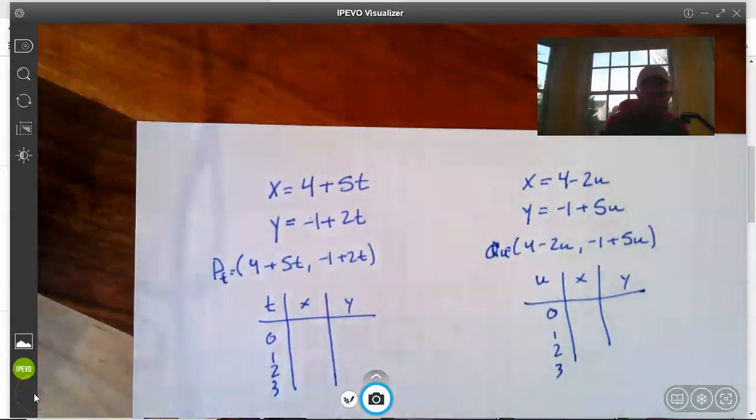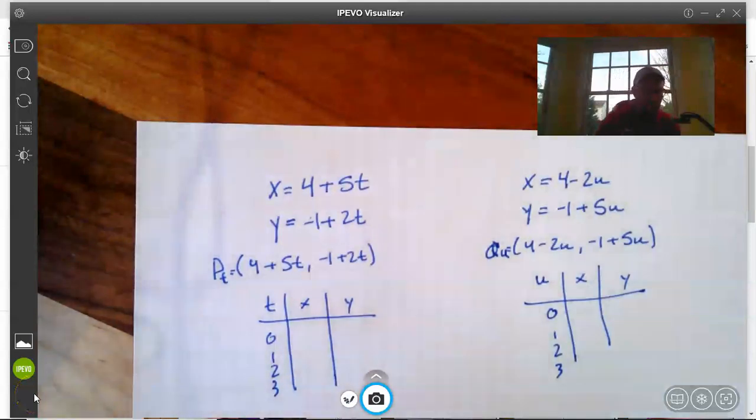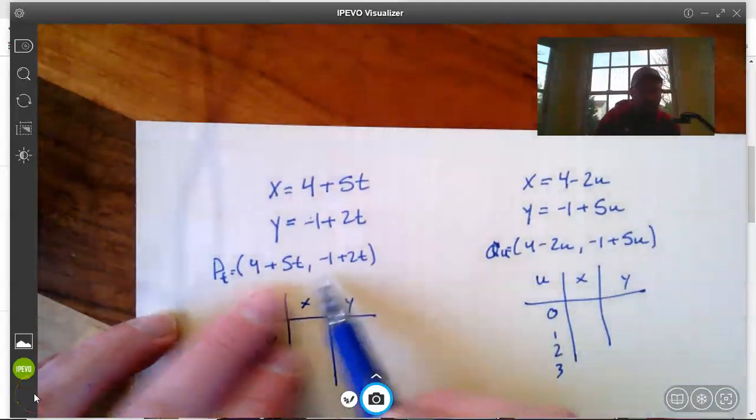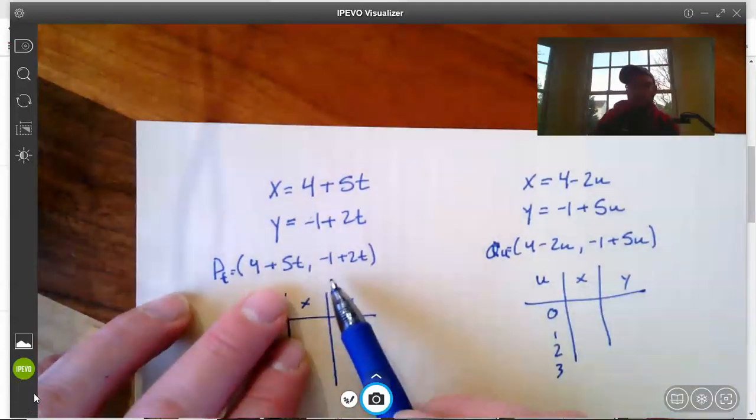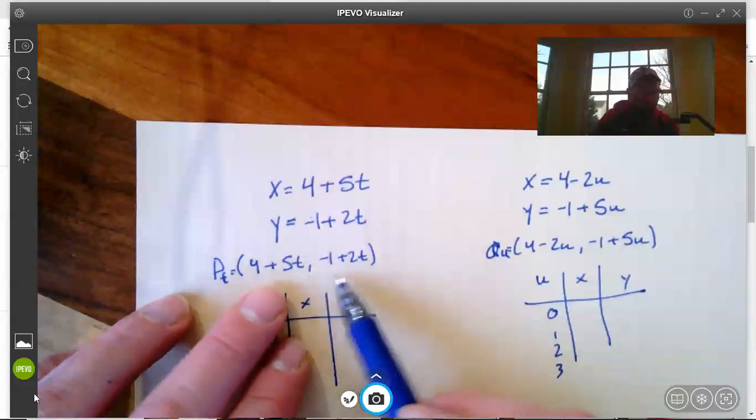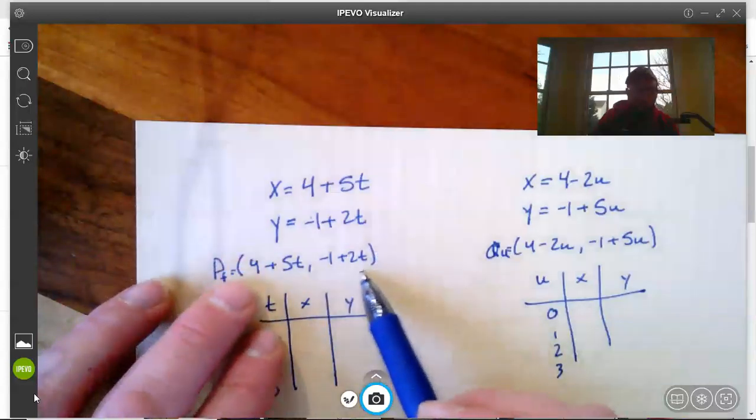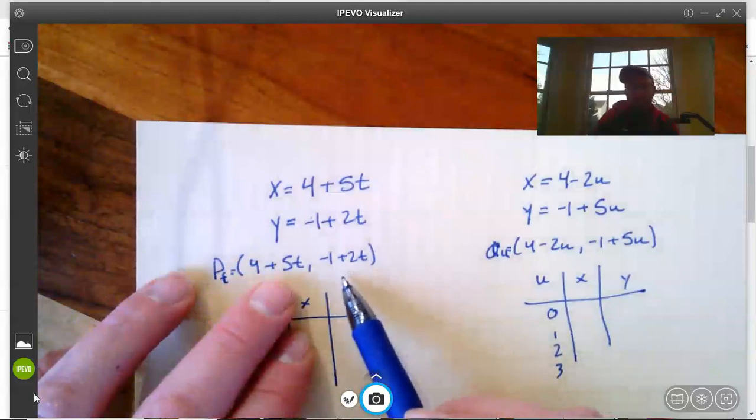Okay, in this problem we're given something you maybe haven't seen before. We're given this kind of formula for a line here, where it's like an ordered pair, but instead of numbers for coordinates, we have these two little formulas.